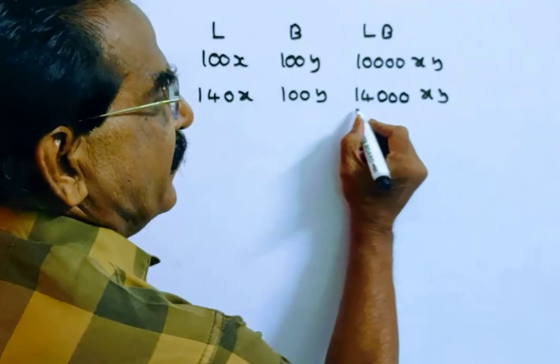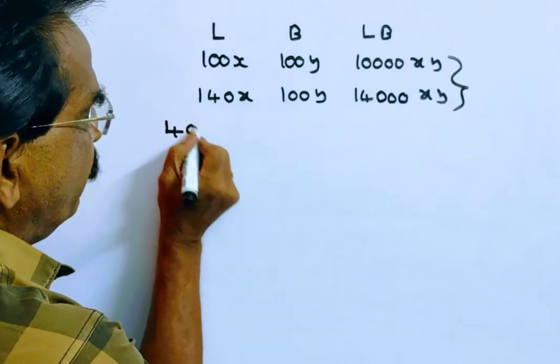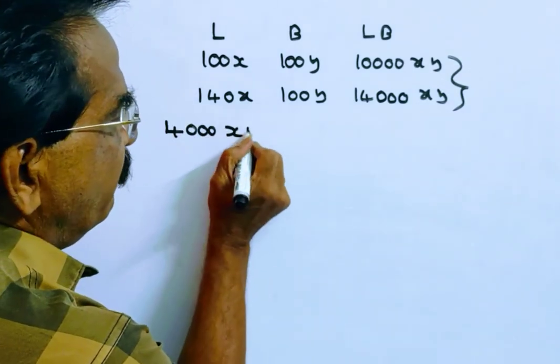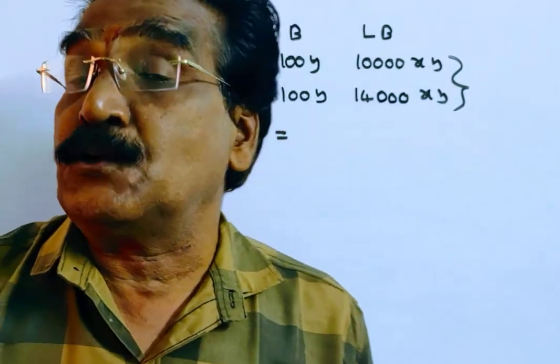The increase in area is 4,000xy. It is given that the increase in area is 24 square meters.